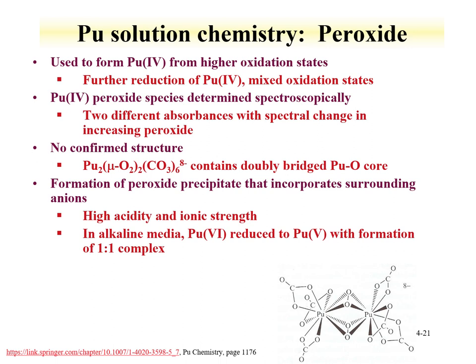Peroxides, as mentioned earlier for uranium and in this lecture on plutonium chemistry, form interesting compounds. The peroxide can also be used to change the redox state, for instance oxidizing from the 4 to the 6. There is no confirmed structure of the plutonium bridge peroxide species, though a structure has been proposed. It is known that you can form peroxide precipitates that incorporate surrounding anions — similar to uranium — making peroxide precipitation a route for separating plutonium from solution.